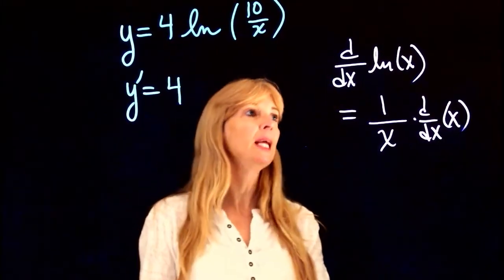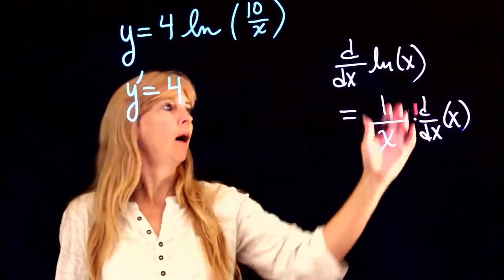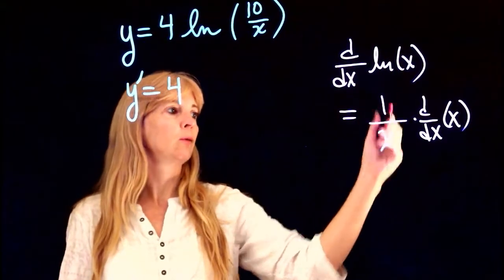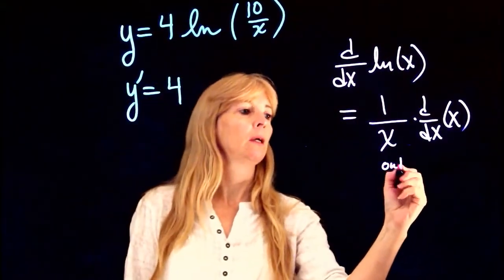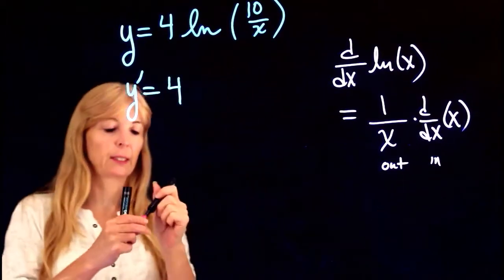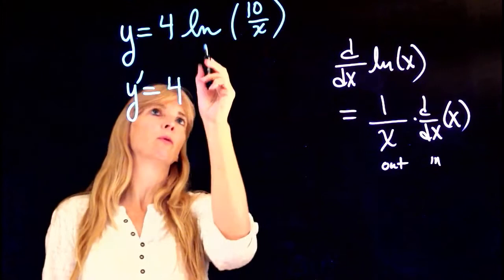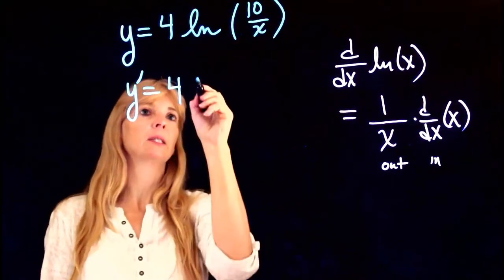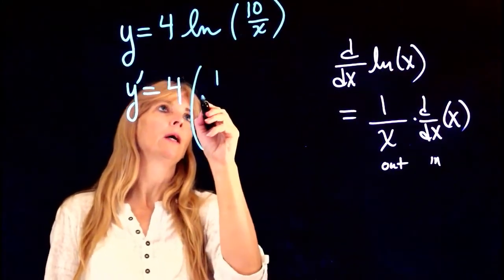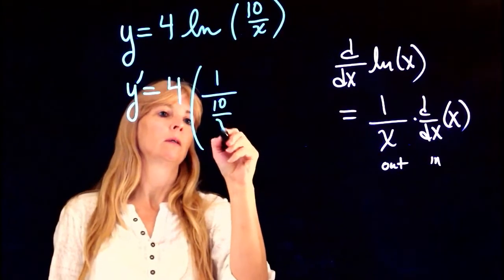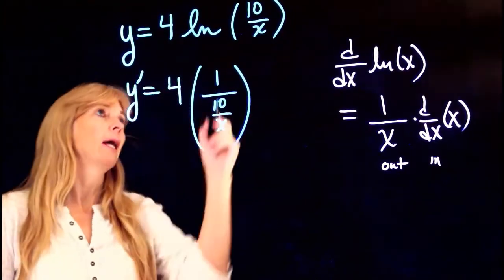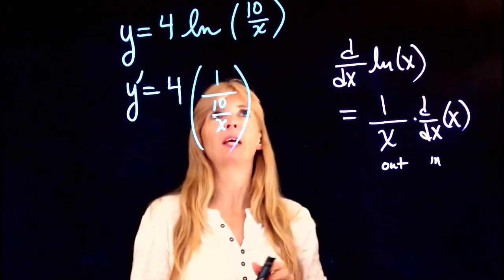So basically what that means is the derivative of the outside, which is this piece, and then times the derivative of the inside. So I know the derivative of ln of this is going to be 1 over that, and now I want to find the derivative of the inside.